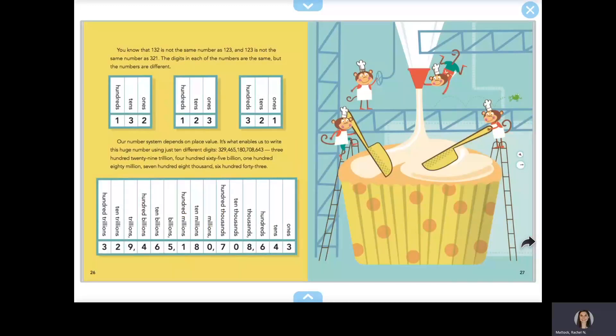You know that 132 is not the same number as 123, and 123 is not the same number as 321. The digits in each of the numbers are the same, but the numbers are different. Our number system depends on place value. It's what enables us to write this huge number using just ten different digits: 329,475,180,708,643.